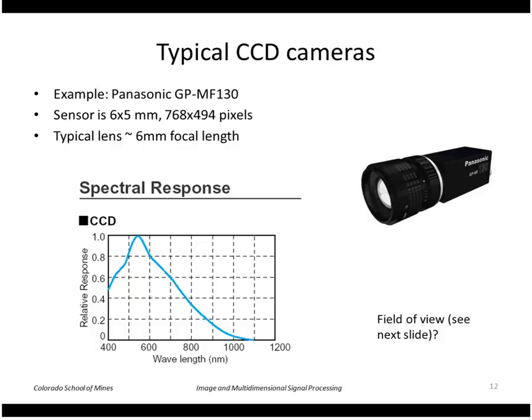So this is an example of a commercial camera. The data sheet says that this CCD sensor array is 6.6 by 5 millimeters and contains this many pixels. And the lens, you can get different lenses for it, but a typical focal length is 6 millimeters. It also shows the spectral response of the sensor to the wavelength of light. It peaks here around 550 or so, that would be a sort of a green.